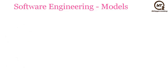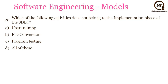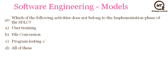The next question is: which of the following activities does not belong to the implementation phase? While implementing a project, user training and file conversion are both needed, but program testing is not a part of implementation. So the answer will be C — program testing.